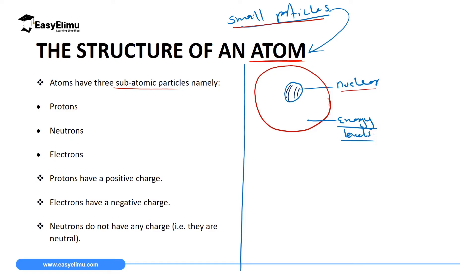The first subatomic particle in the nucleus is the proton. Protons are found inside the nucleus and they are positively charged. The other subatomic particle found inside the nucleus is the neutron. Neutrons are also found inside the nucleus, and a neutron does not have a charge — so it is neutral.